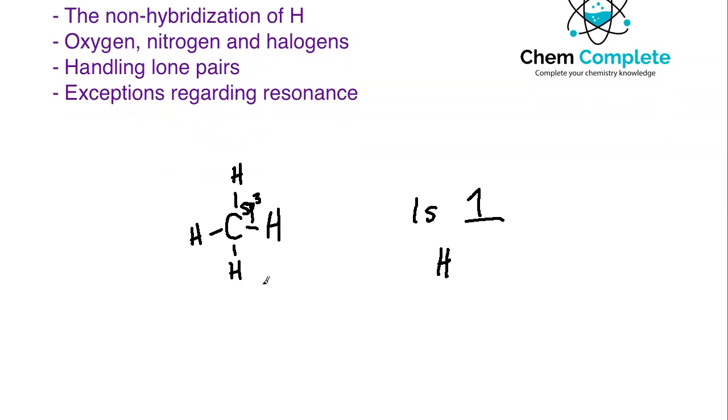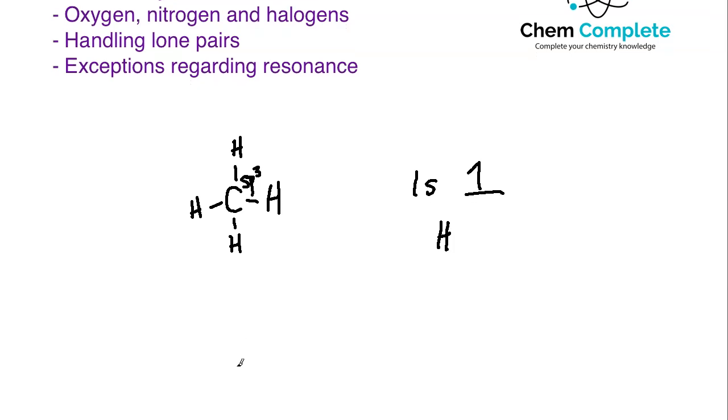What about some of the other very common atoms or elements that we come across in organic compounds? Namely, what about oxygen, nitrogen, and the halogens? And when I say halogens, I'm including fluorine, chlorine, bromine, iodine in that group, and you will very often come across them when you're looking at things like leaving groups for SN1 and SN2 reactions. So how do they behave in terms of hybridization?